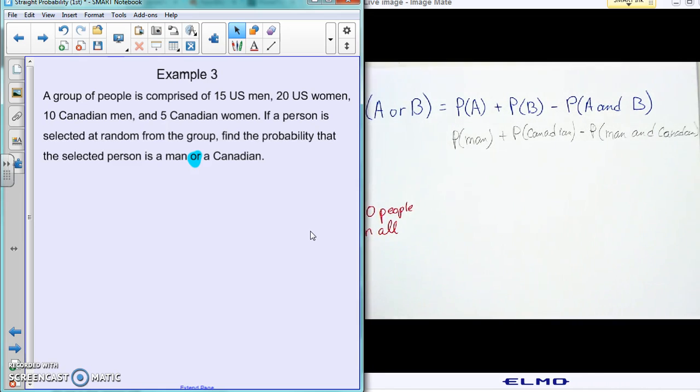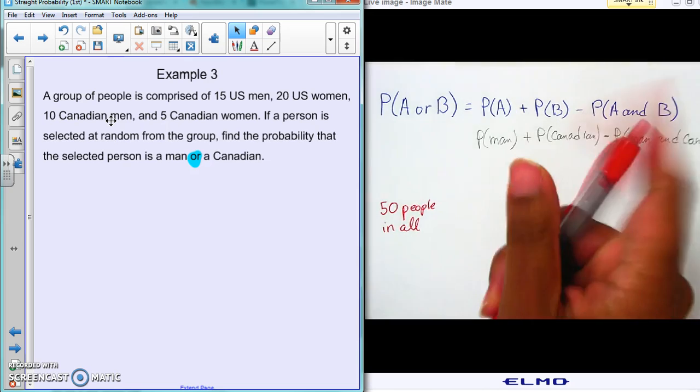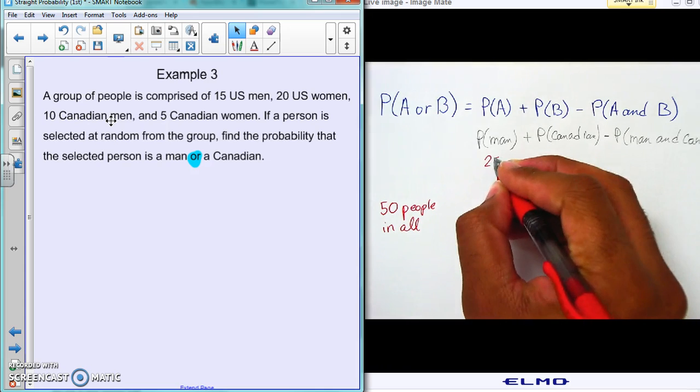Now of those 50 people, how many of them are men? So here there's 15 US men and 10 Canadian men, so how many men are there in all? 25. There's going to be 25 out of 50.